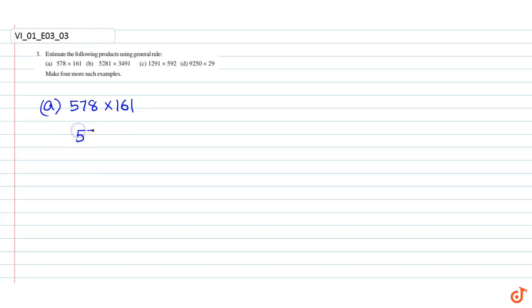578 can be rounded to 600, and 161 can be rounded to 200. Therefore, the product is 600 x 200 which is equal to 120,000.